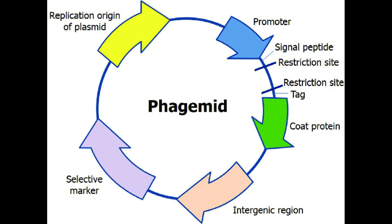Phagemids are also hybrids of plasmids and phage vectors — phage DNA and plasmid DNA are hybridized to form these artificial vectors. They can have the replicative powers of both plasmids and phages, and can replicate non-lytically like a plasmid without killing the bacterial cell, or they can behave like a phage by lysing the bacterial cell. They can thus behave as plasmids or as prophages, and they have helped overcome the size limitation problem of conventional phage vector systems.